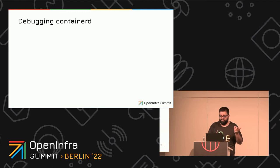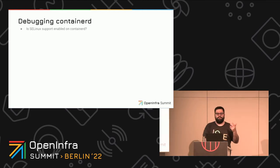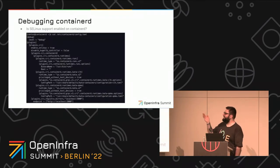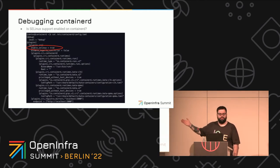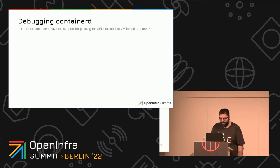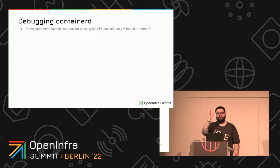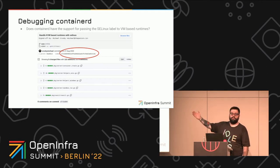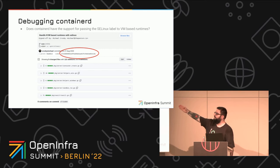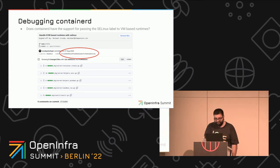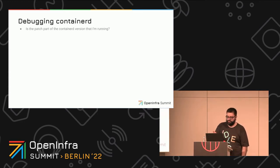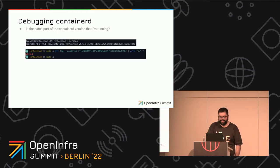I started debugging this. The first thing that came to my mind was: is SELinux actually enabled on the containerd side? Looking at the configuration, it is enabled — I didn't miss that. Does containerd actually have support for passing the container_kvm_t label down to Kata Containers? It does — it was added by Michael Crosby in a commit almost a birthday gift for me, one day before my birthday in August 2020. And I was running containerd 1.5.2, which includes that patch.